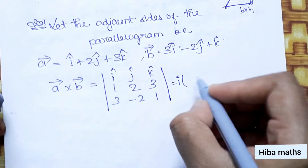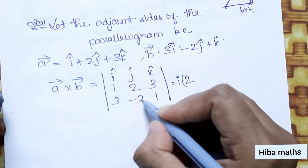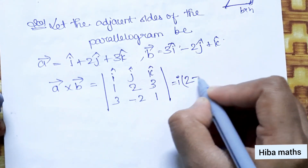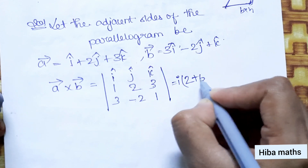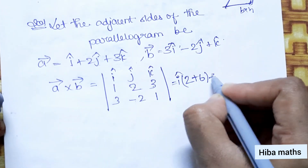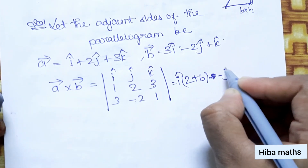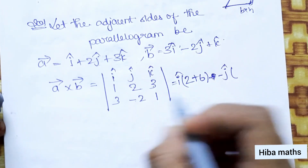Computing the cofactors: 2×1 − 3×(−2) = 2 + 6 = 8 for the i component, then continuing with the j and k components.